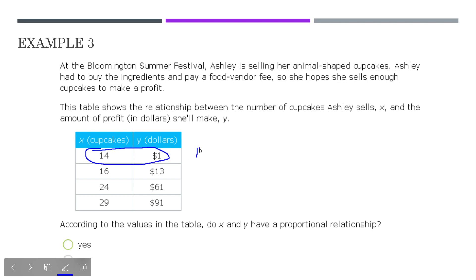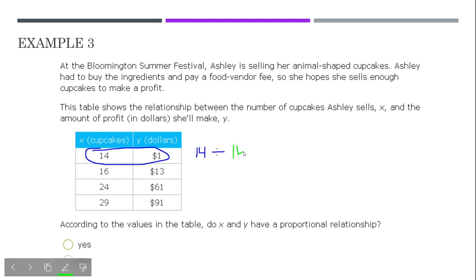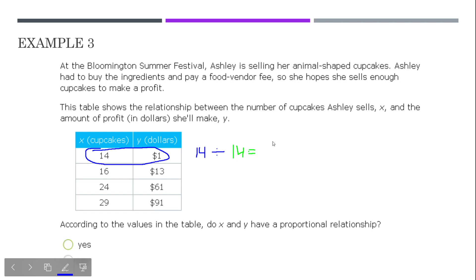So, let's look at this first row. When she sells 14 cupcakes, she makes $1. It doesn't seem very good. But, that's what we're seeing. That's what the data is showing. Now, we know 14. To turn that into a 1, you would have to divide that by 14. Okay. And, that tells us, every 14 cupcakes she's making $1. We want to see if that's always the same rate.